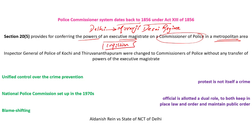All those functions taken up by the executive magistrate in a district — usually an IAS officer — go to a police officer in the metropolitan area. The metropolitan area is defined in Section 8 of the CRPC: the state can declare any area with a population of more than 1 million to be a metropolitan area. In this commissionerate system, the dual control of IAS officers and the police hierarchy is done away with, and all powers of public order are given to the police commissioners.